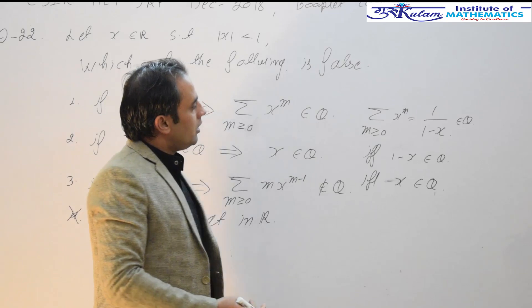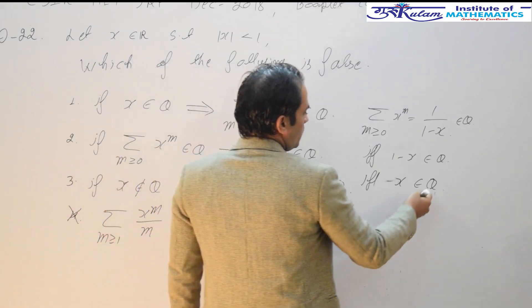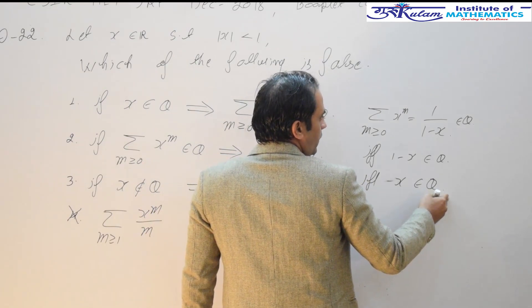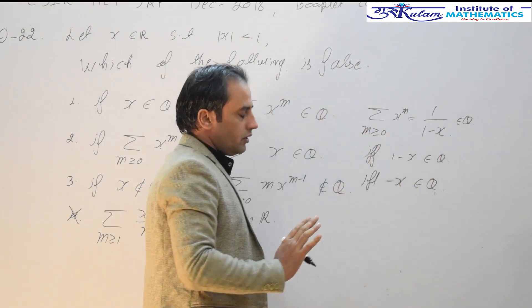Simply use the property of group theory. Since Q plus is a group, x is belonging to Q if and only if 1 upon 1 minus x is a member of Q.